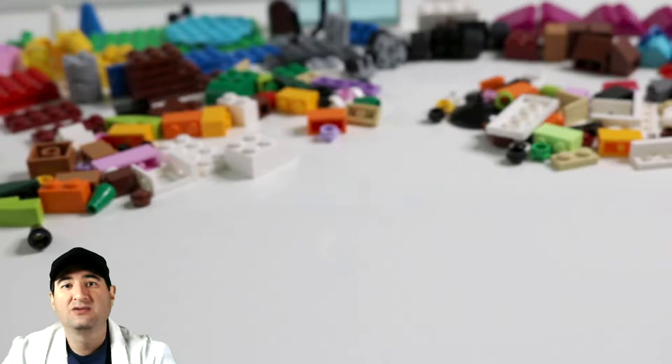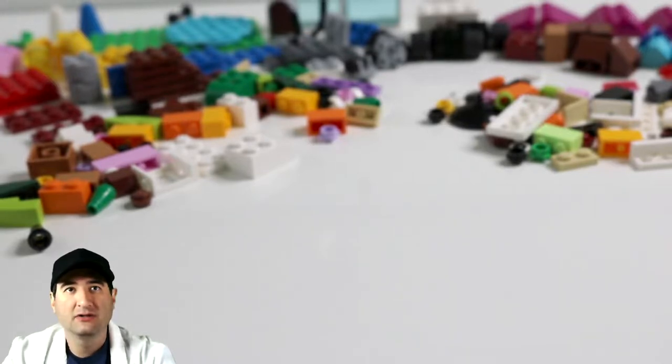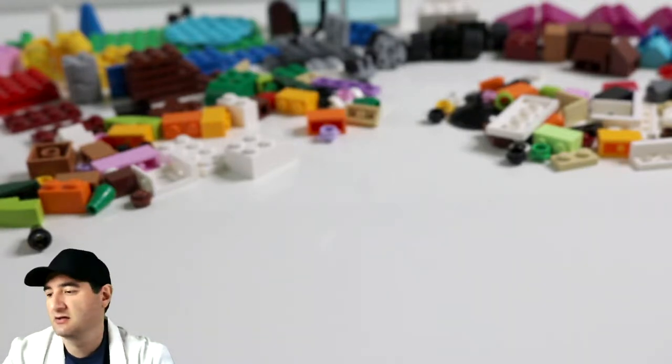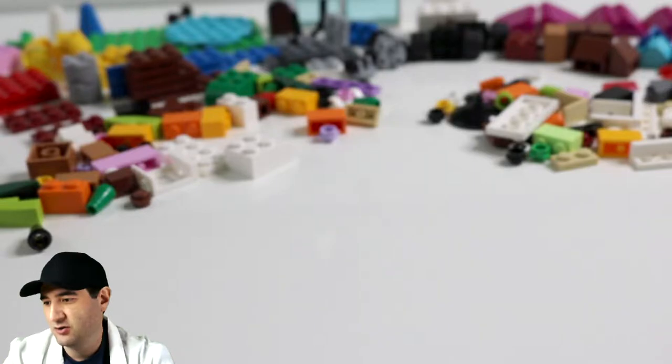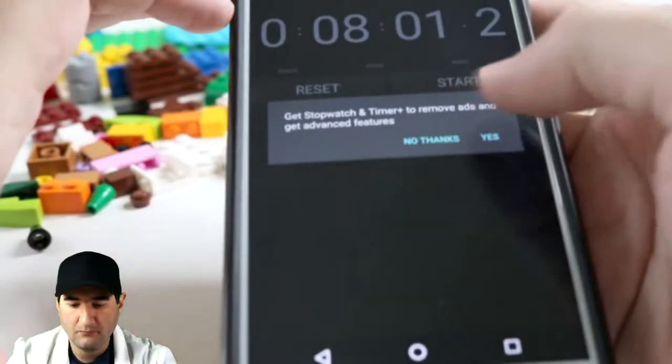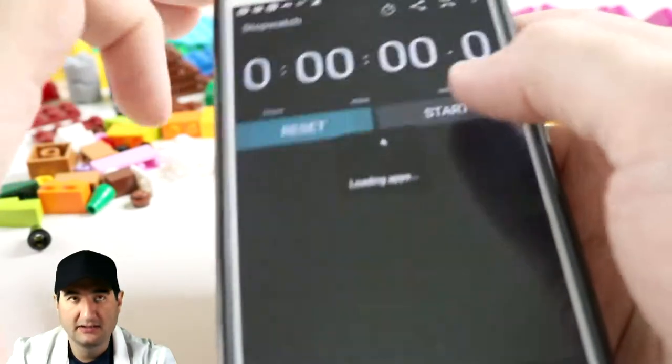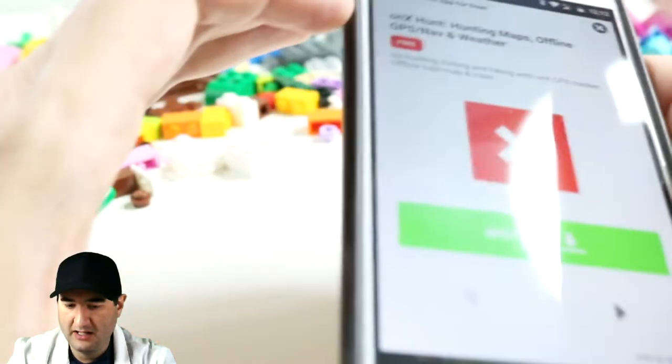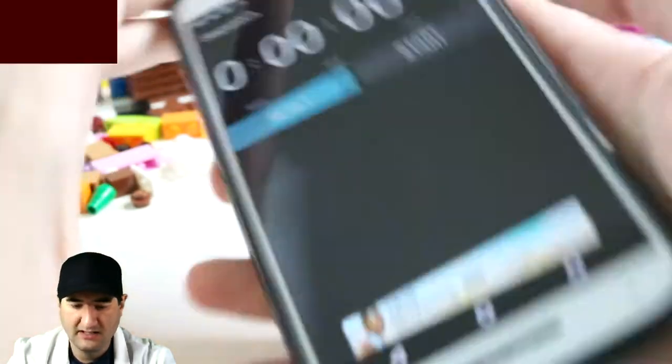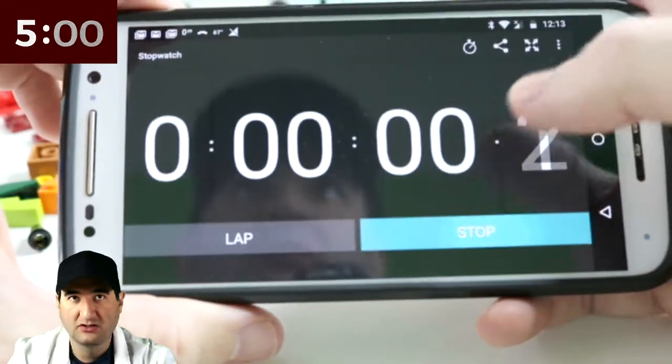So we need to build an igloo. So how are we going to build an igloo with only 221 pieces? I'm not sure, but let's get started. Let's put five minutes on the clock. So here we go. Reset. Whoa. Ads. Reset. And start.